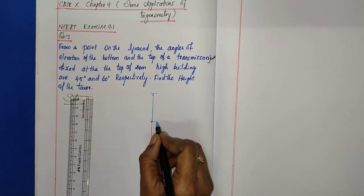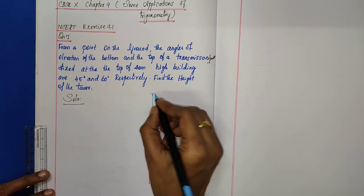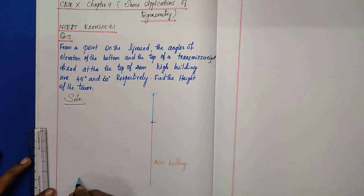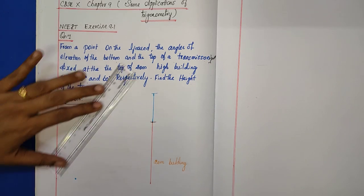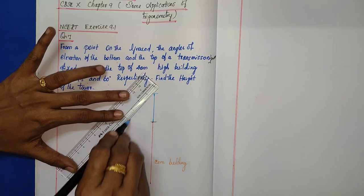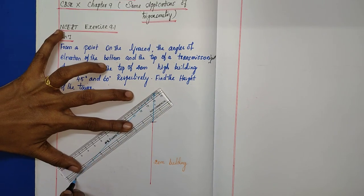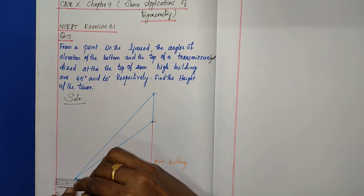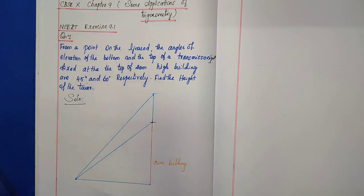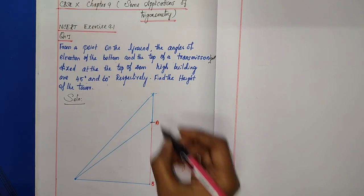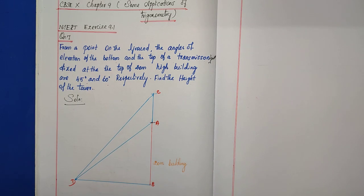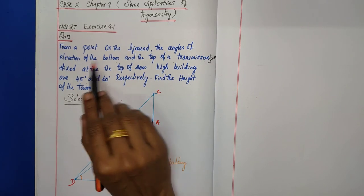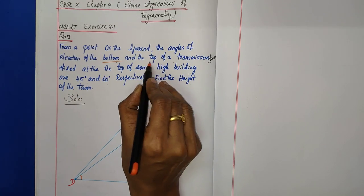The elevation of the top and bottom of the transmission tower from a point on the ground is 45 degrees and 60 degrees. Mark a point on the ground, then join the lines to the top and bottom of the tower. Label the points: A, B, C, and D.